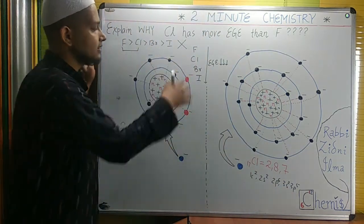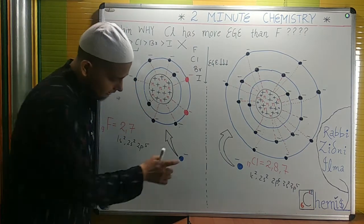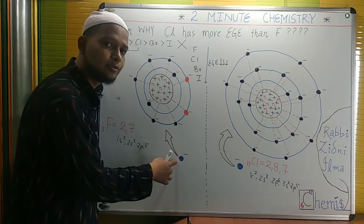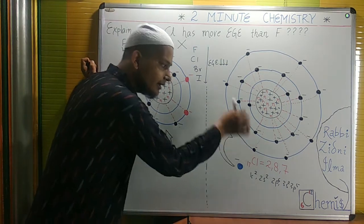All the electrons are shown clearly as well as the nucleus. Now look here, this is the electron which we will add here, and this is the electron which we will add here.